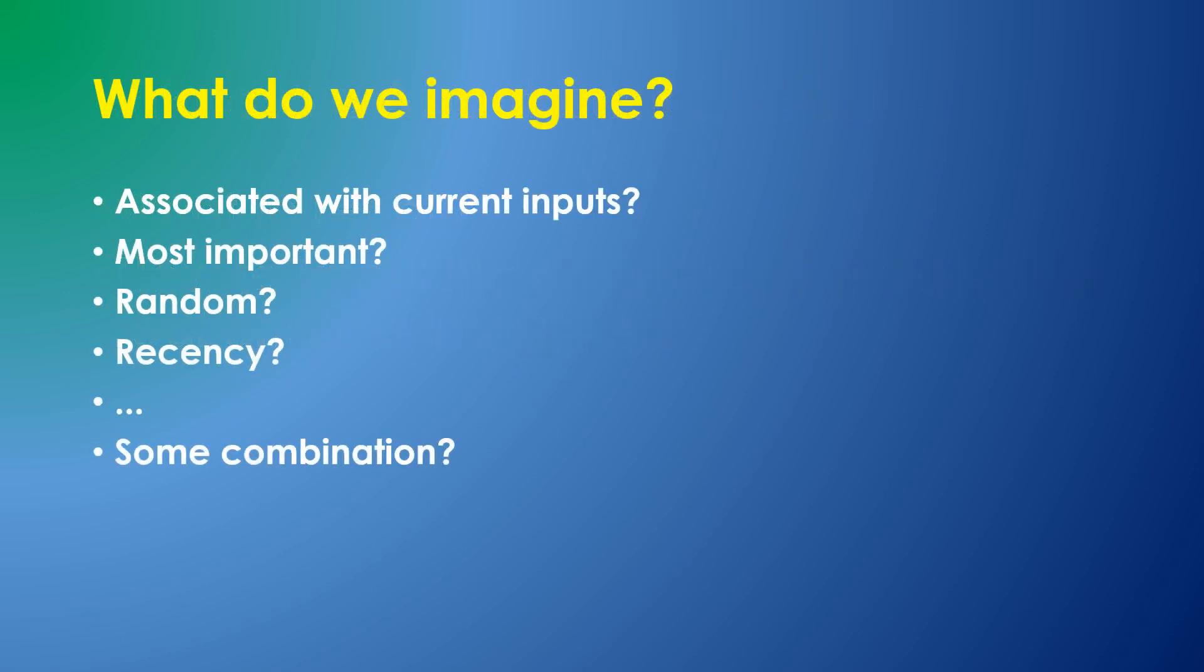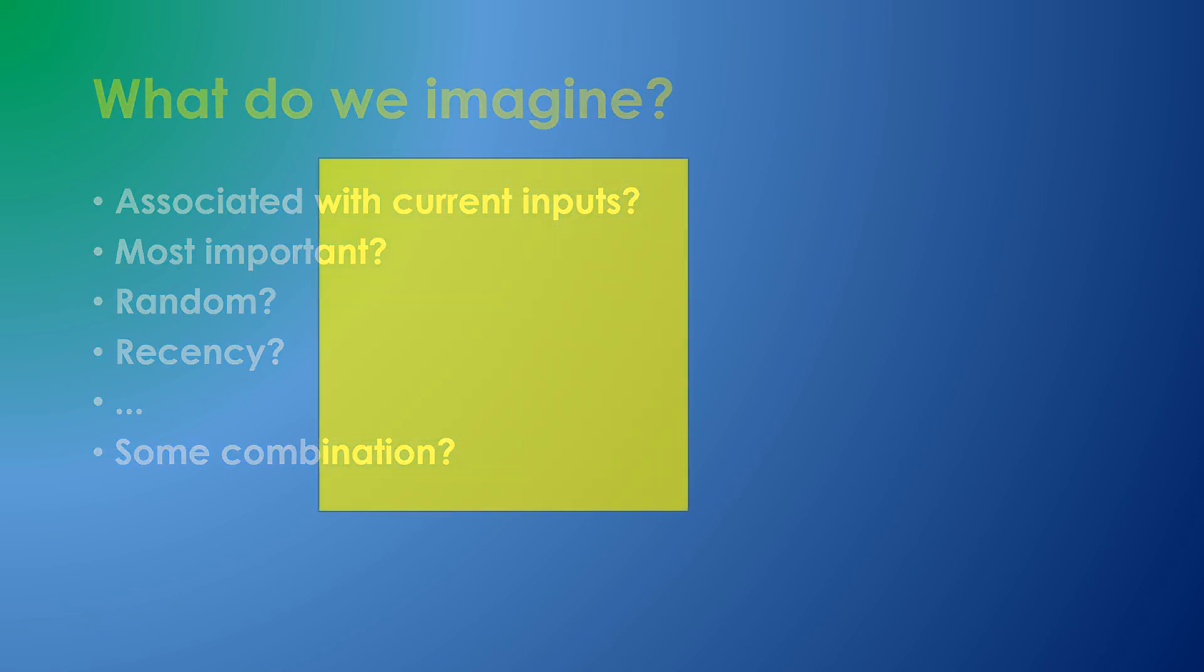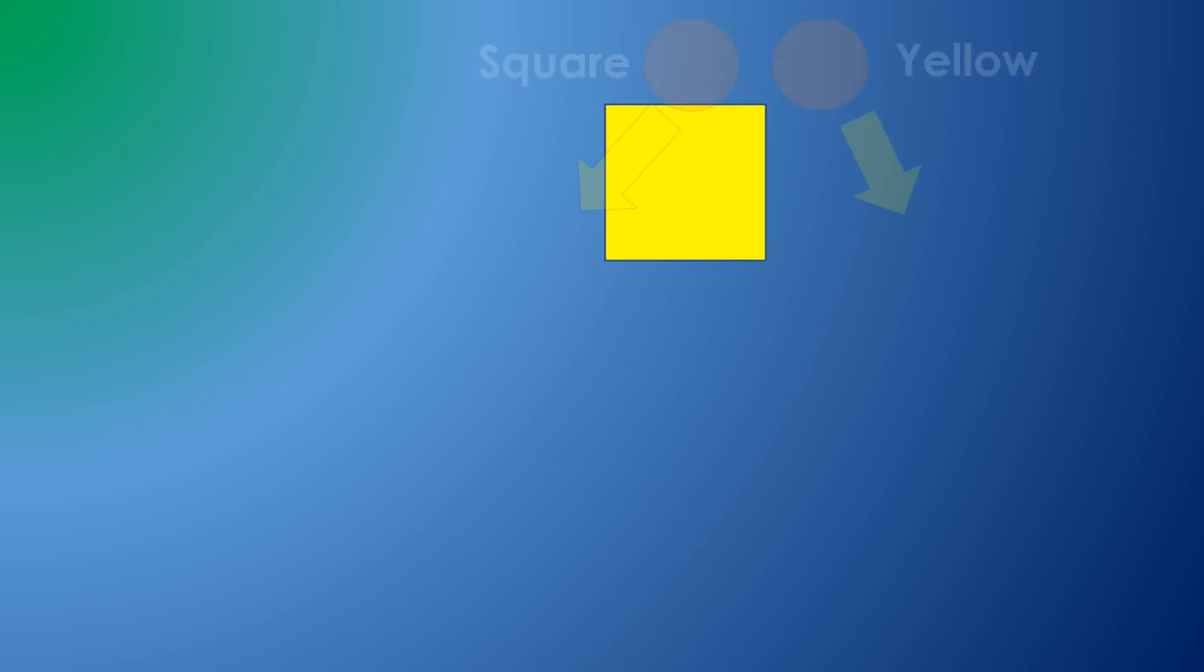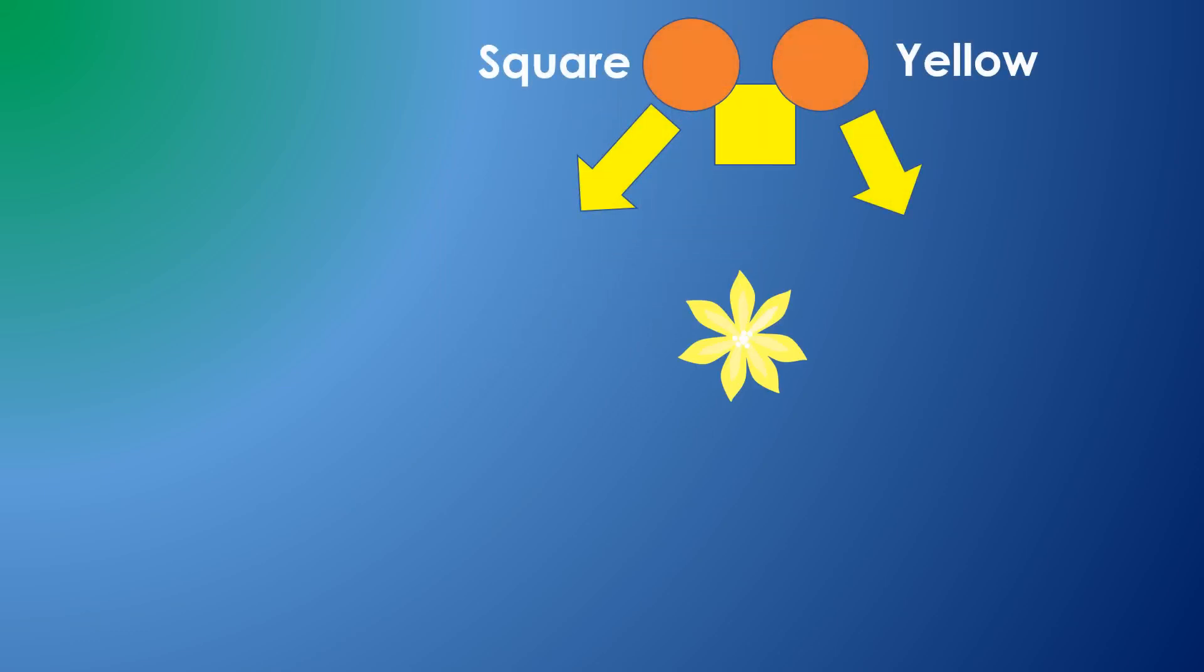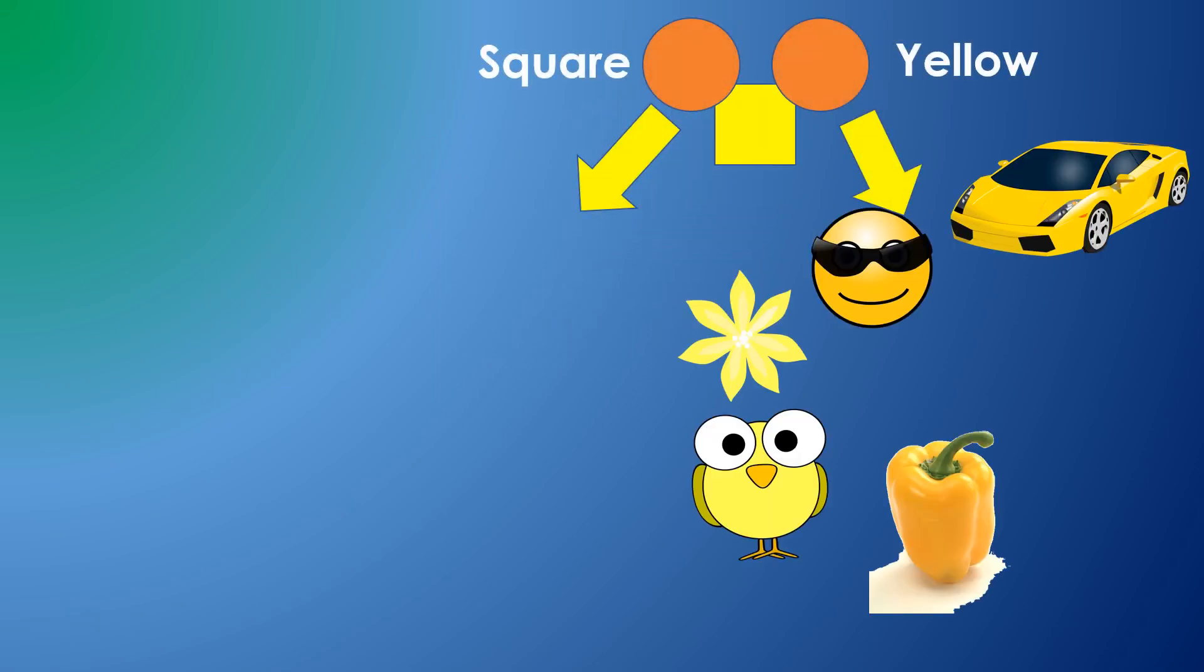If you are awake, you might imagine things directly related to things you see and hear. In a previous video, we considered a yellow square, and considered that your knowledge base might return related objects which are yellow, or objects which are square.